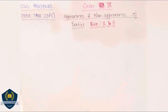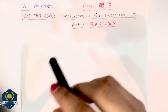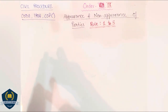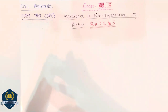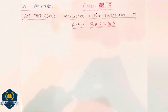Hello everyone, welcome to our channel. Today we are going to start Order 9 and it is going to be our very first session of this order. Order 9 is about appearance and non-appearance of parties. The Civil Procedure Code contains Order 9 — appearance and non-appearance of parties — and today we are going to discuss just Rule 1 to 5 of this order.